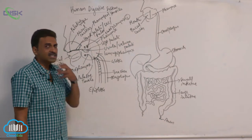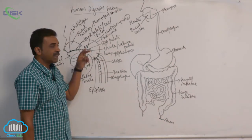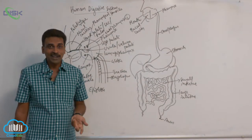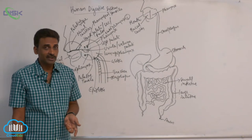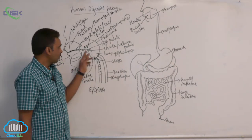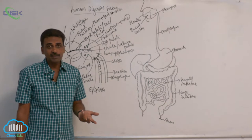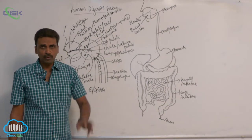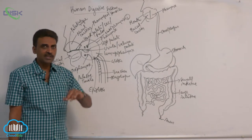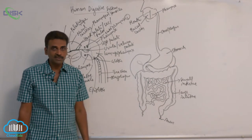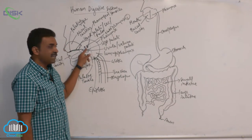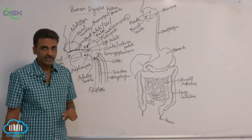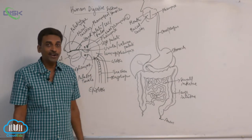Inflammation of the tonsils is called tonsillitis. When inflammation is severe and unstoppable, the tonsils are removed in a procedure called tonsillectomy. In children, structures called adenoids can block nasal passages; removal of adenoids is called adenoidectomy.